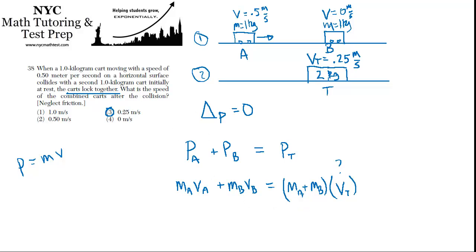And now we can go ahead and make our substitutions. Mass A times velocity A is one kilogram times 0.5 meters per second. And then mass B is also a kilogram, but velocity B is zero. So there's no momentum, which makes sense. This isn't moving, so it doesn't have any momentum. Velocity B equals zero, so we can just leave that whole term out.